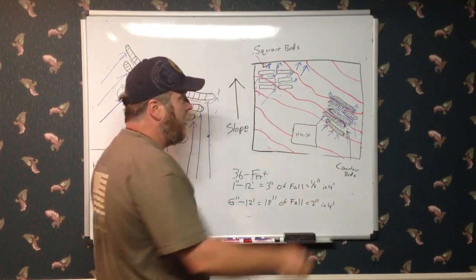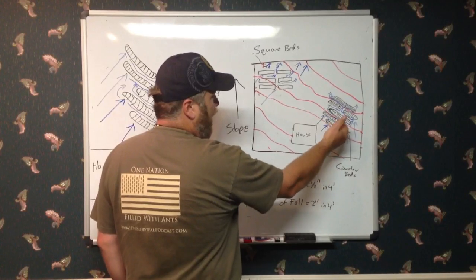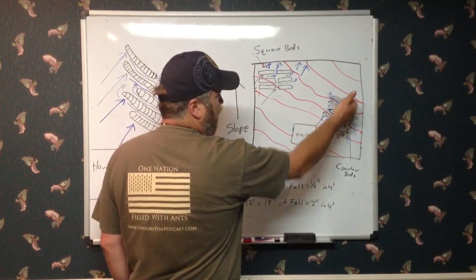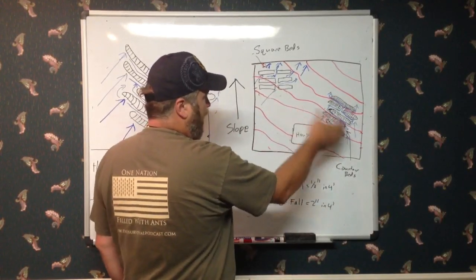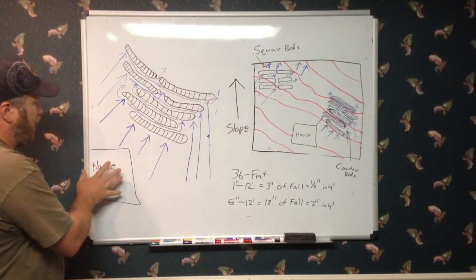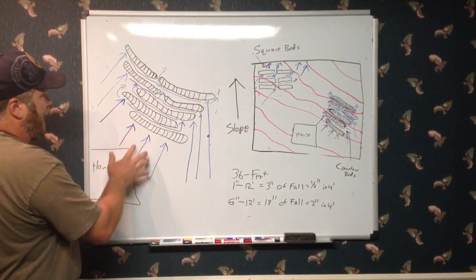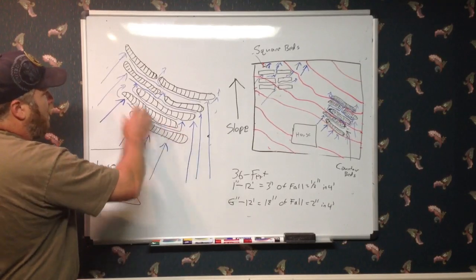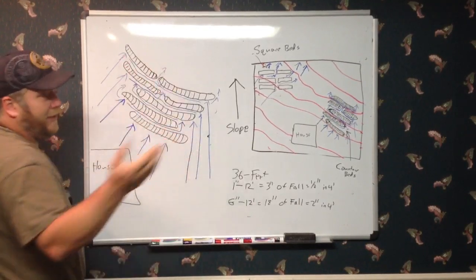And each one of these beds, again, it's not to scale. I'm not a good artist. Assume these beds are four foot wide and the paths between them are four foot wide. So as the water hits, we'll come over here now. So now we have our house. And here comes all this water off of the house directed down. It hits this line. Now, why are these curved this way? Because that's the way the contour lines go.